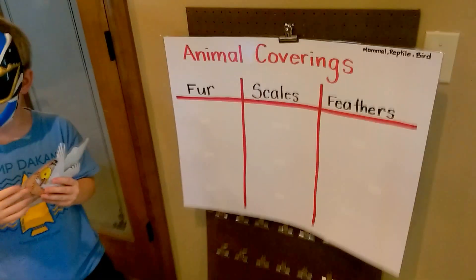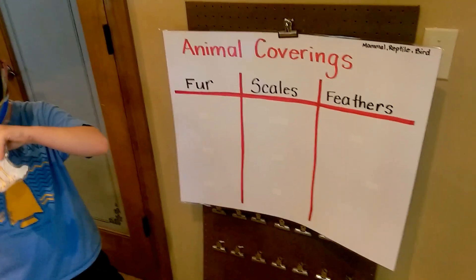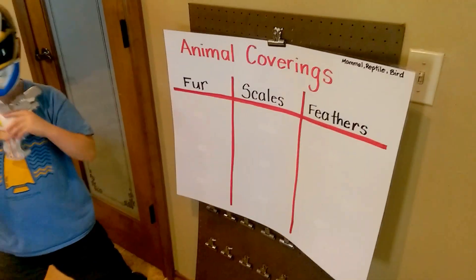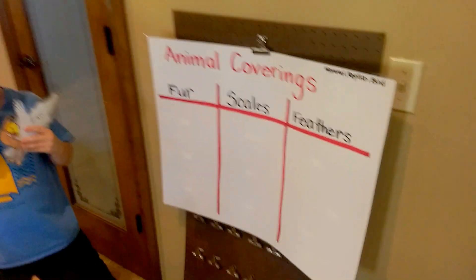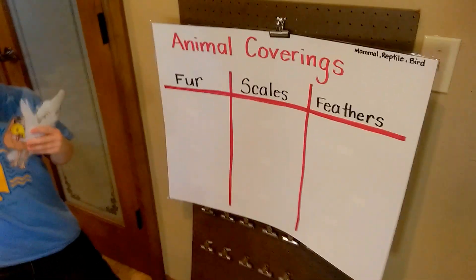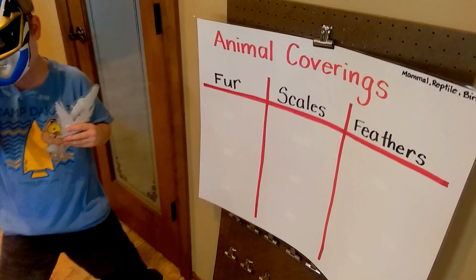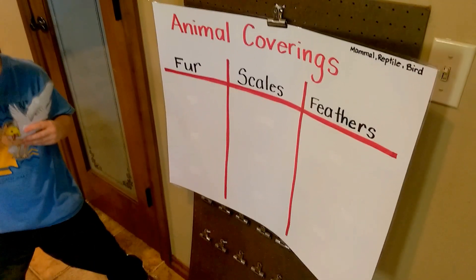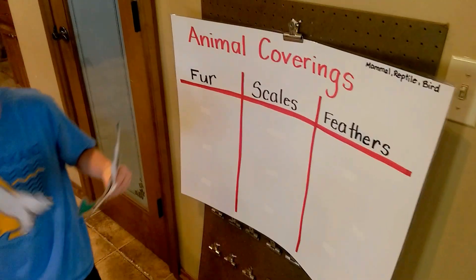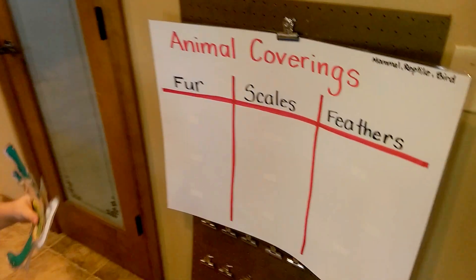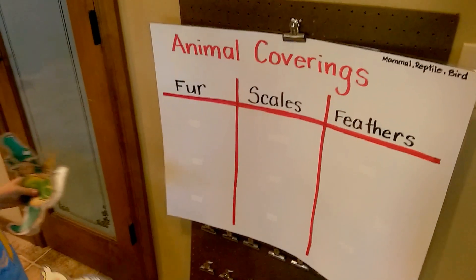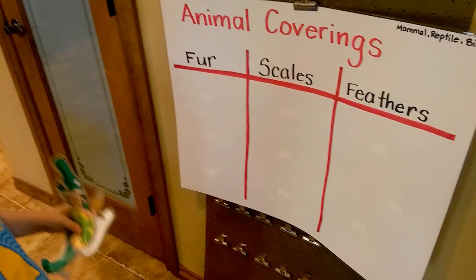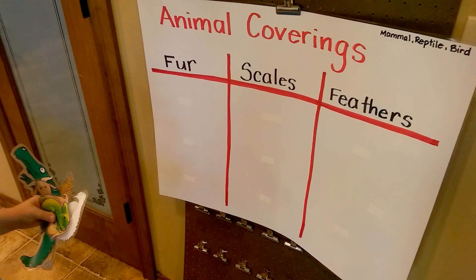Okay buddy, so here we're going to talk about animal coverings. There are different animals that have different kinds of coverings. What kind of coverings do animals have? Are you able to see right there? I know you can read — some of my students can't read, but I know you can, Eli. Can you tell me what each of those are?